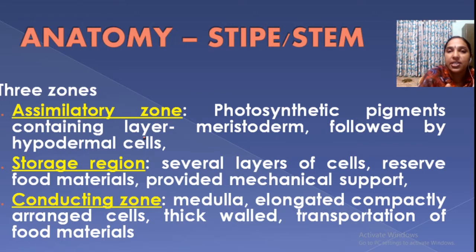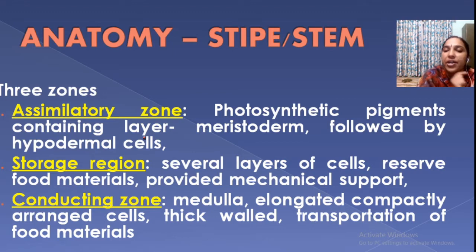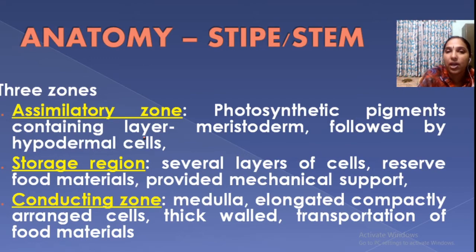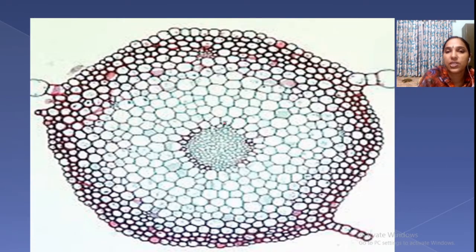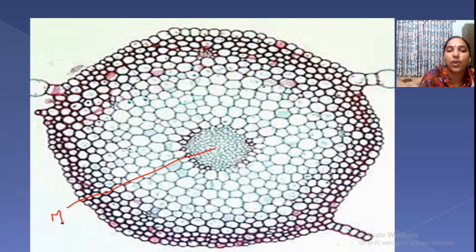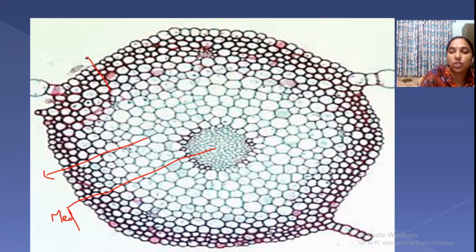Then it is followed by the storage region, which contains stored food materials. Next is the centermost part — the conducting zone — that is tightly packed thick-walled cells where transportation of food material takes place. In the diagram, the centermost portion is called the medulla; the second region is the cortical region; and the outermost is the meristoderm.